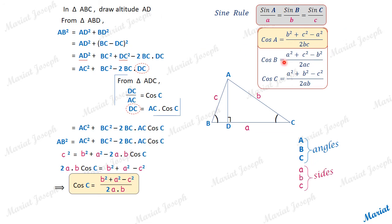The cosine rule and sine rule are very useful in solving a triangle — that is, finding the unknown parts of a triangle when a sufficient number of parts are given.